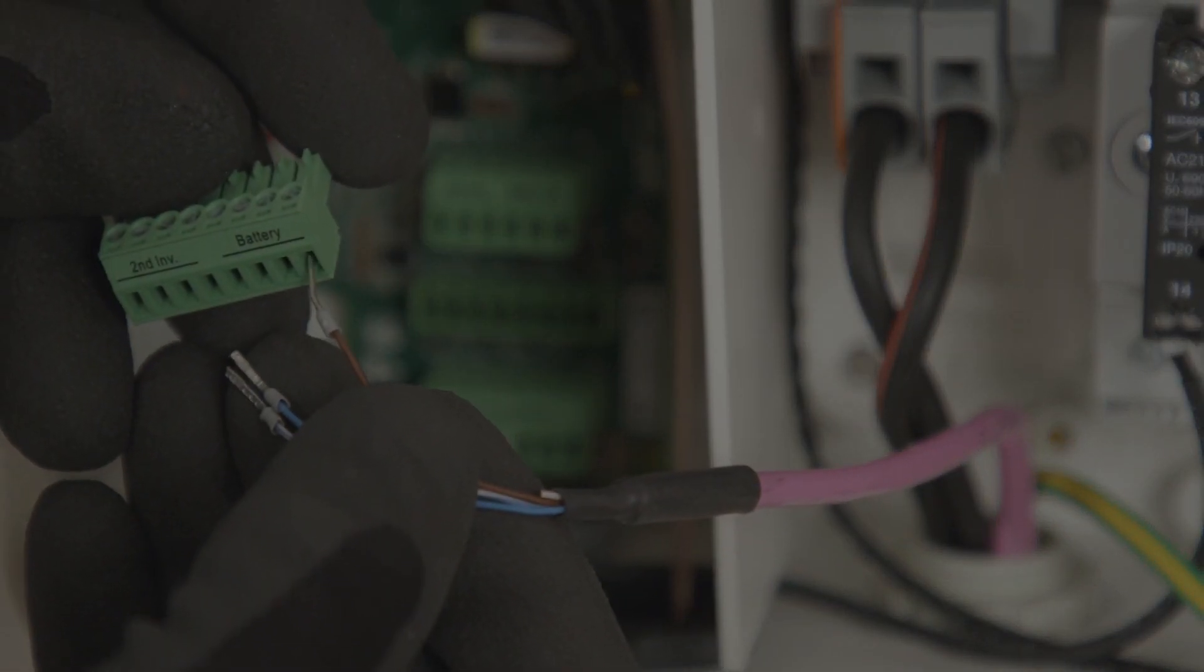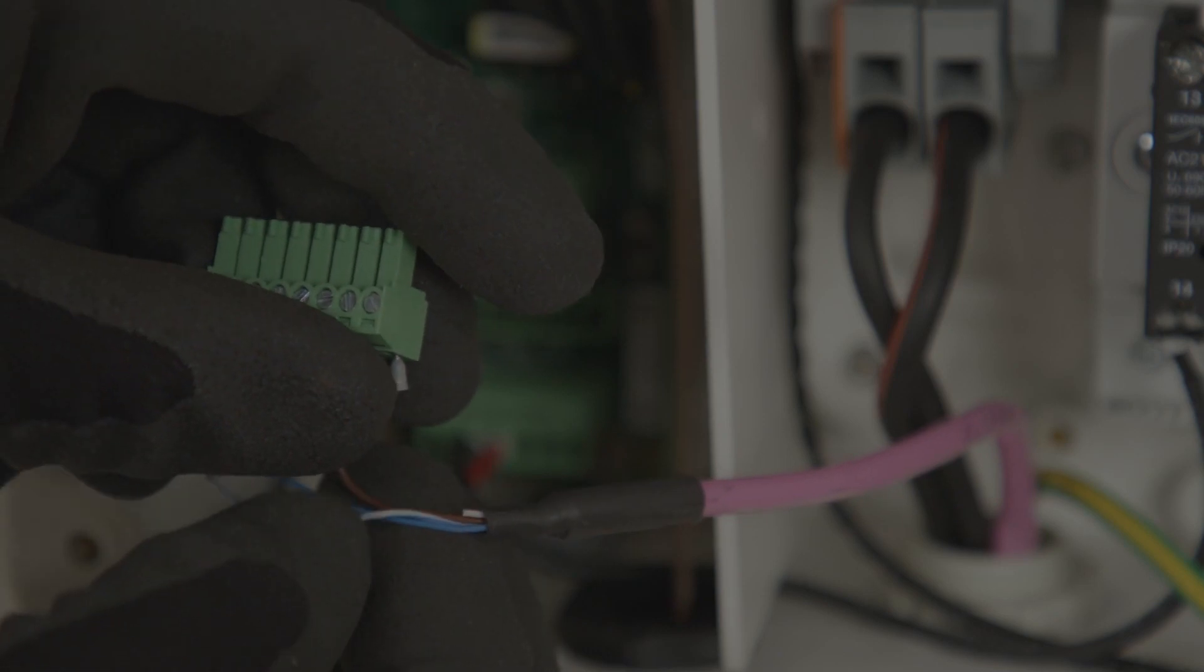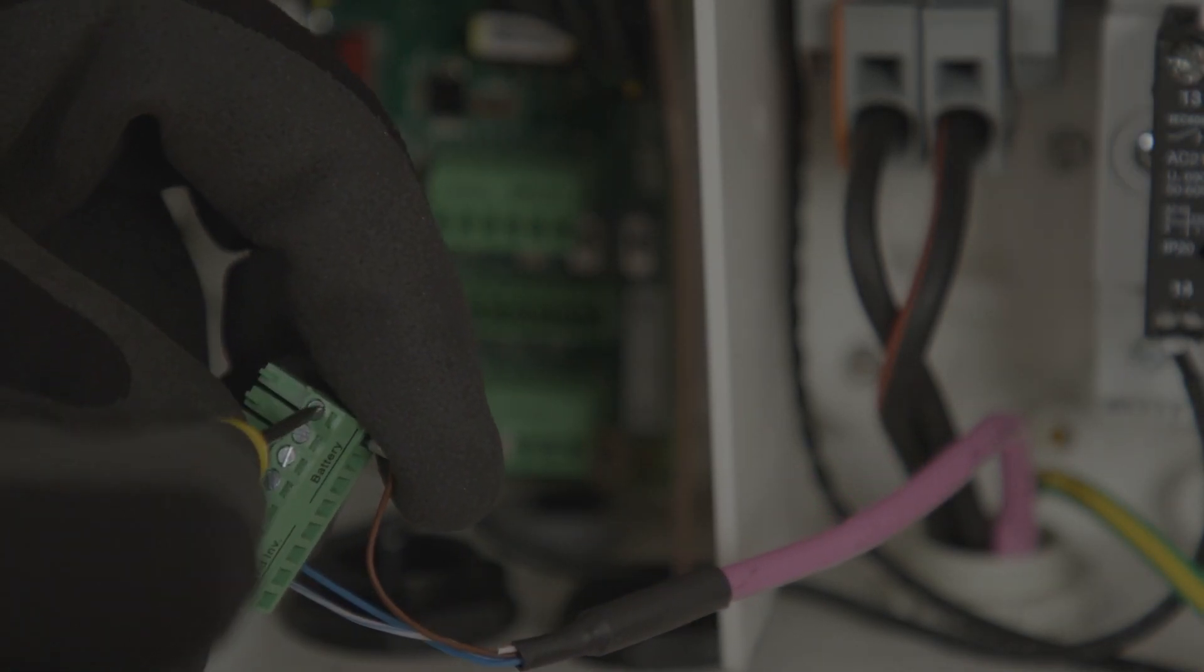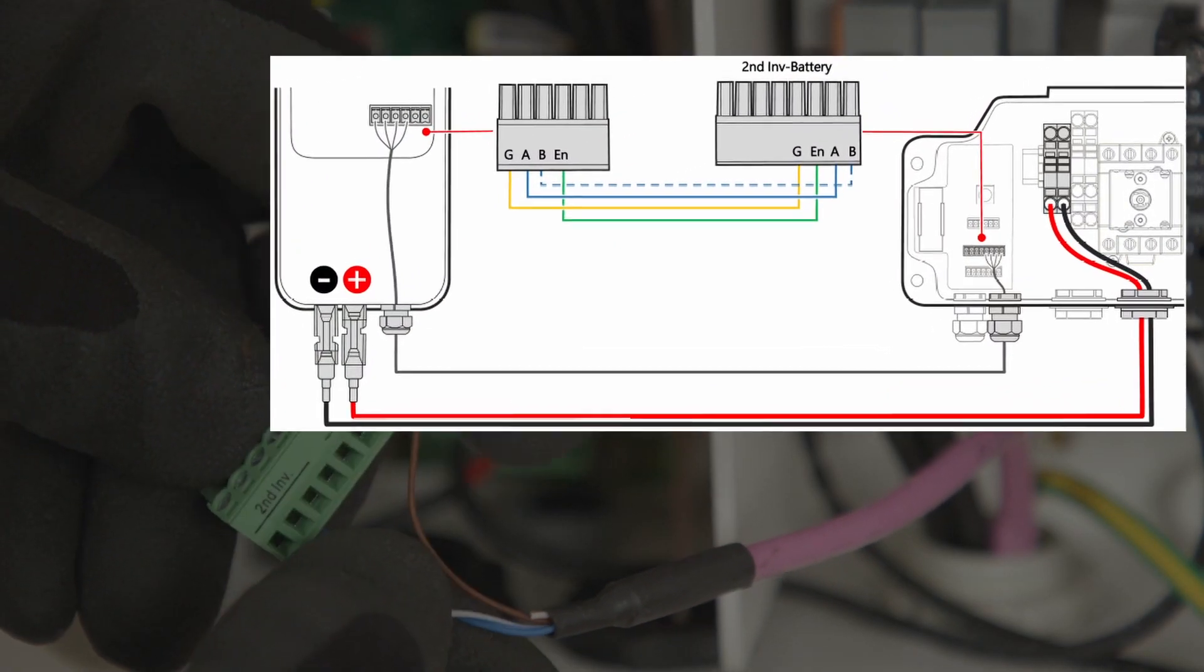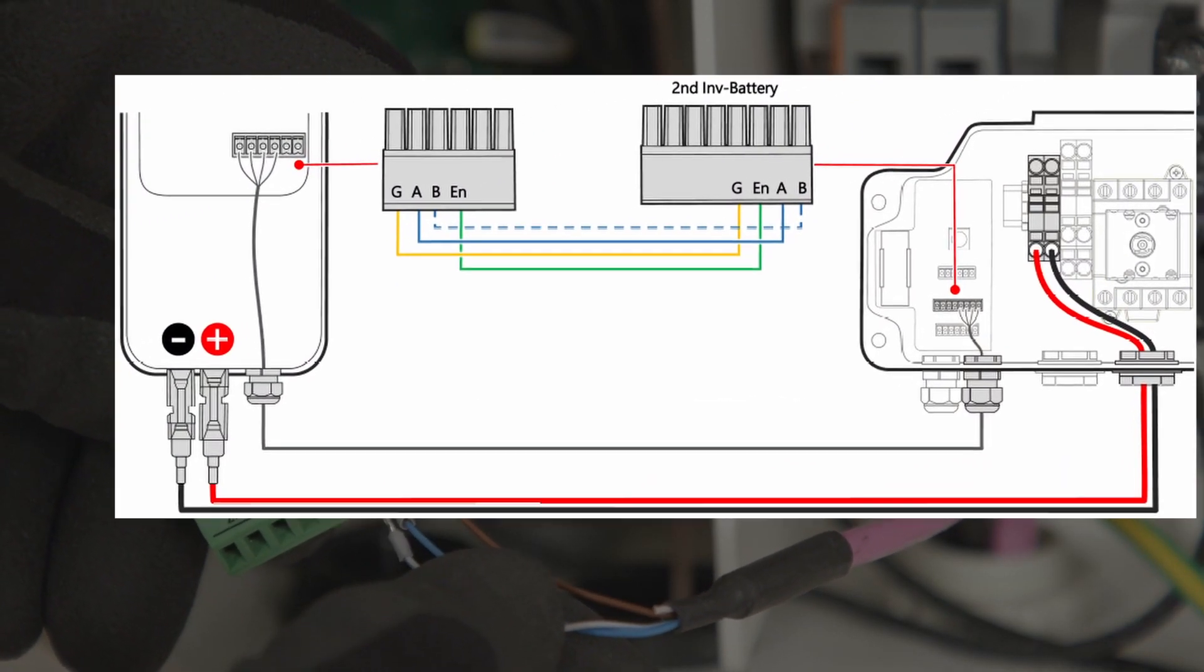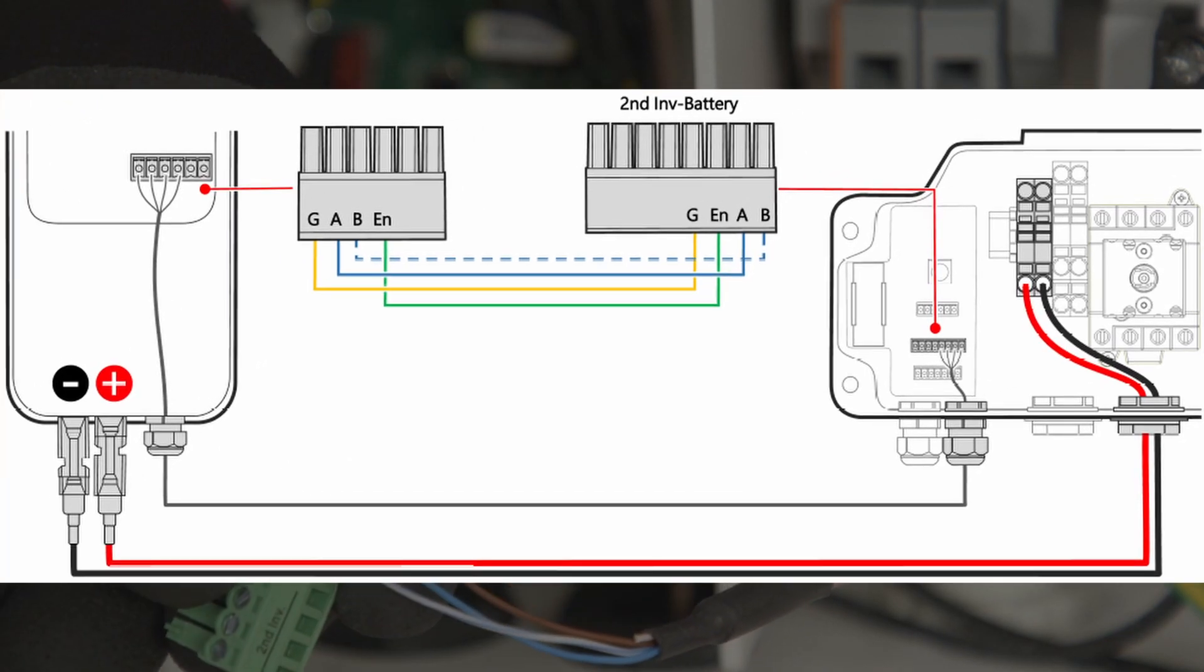If the SolarEdge home battery is being connected via RS-485, you'll also need to wire the battery to the battery terminal on the communications terminal connections on the left-hand side of the DCD. This port is also used for LG Prime battery connections.